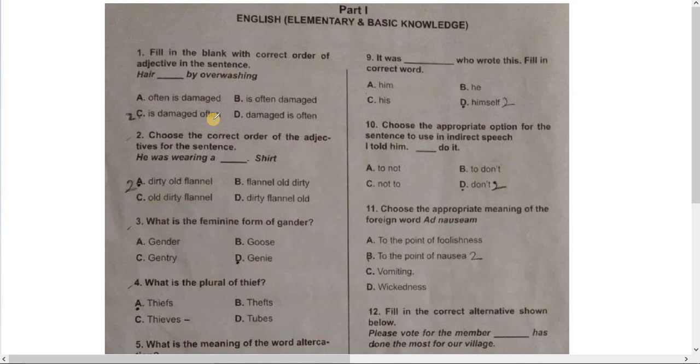Number C: is damaged often. Number D: damaged is often. Correct sentence again, Number B. Here is often damaged by overaging.